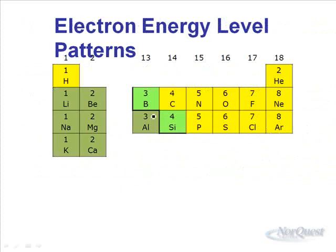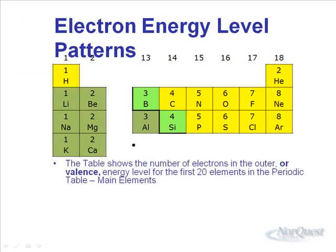If we take a look at just some patterns on the periodic table, here we have the first 20 elements. If we look at the number of electrons in their outer energy level, or their valence energy level, what we'll see is that the number is the same within each group. For group 1 elements, the number of electrons in their valence shell is 1.